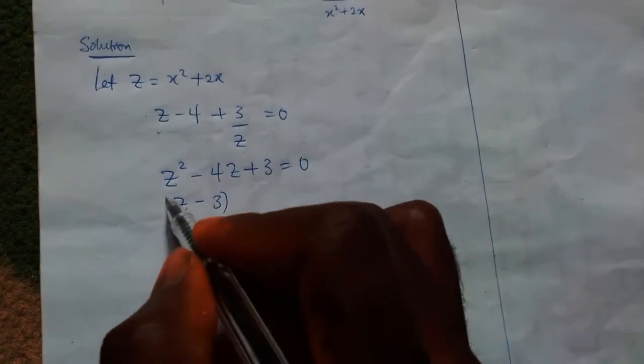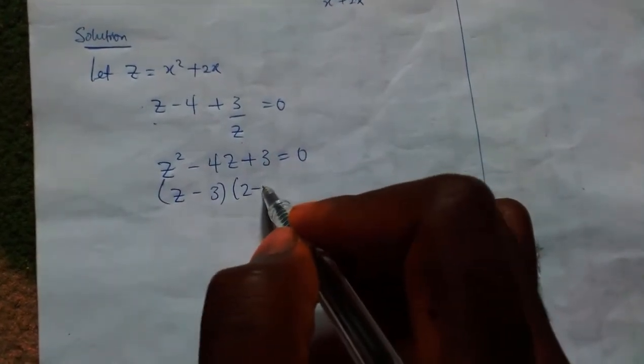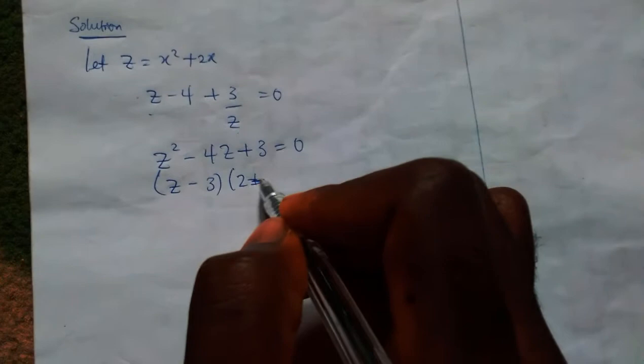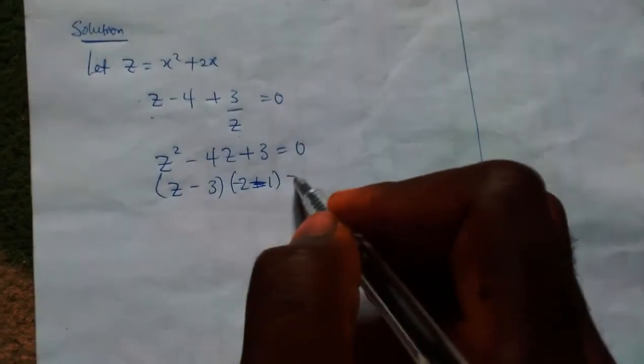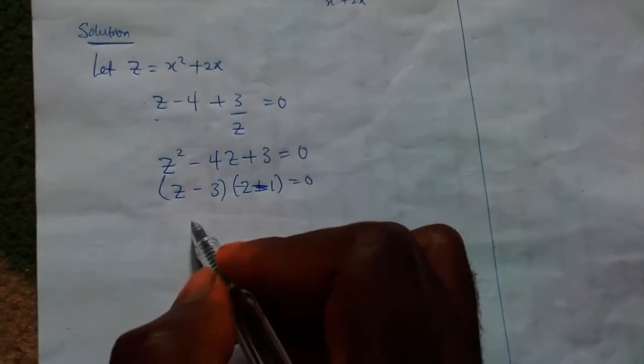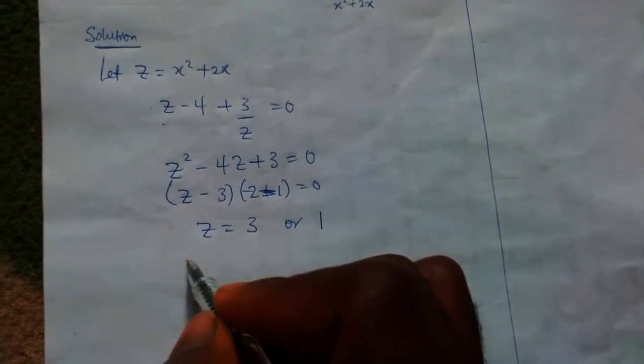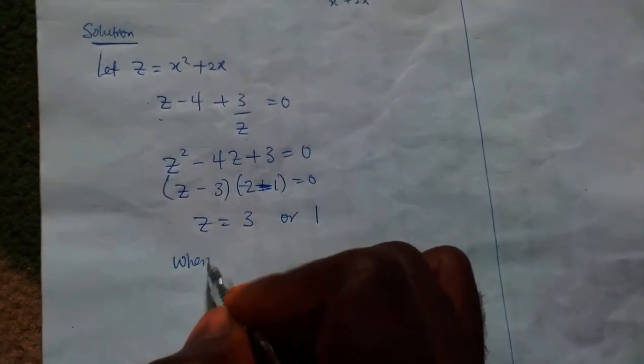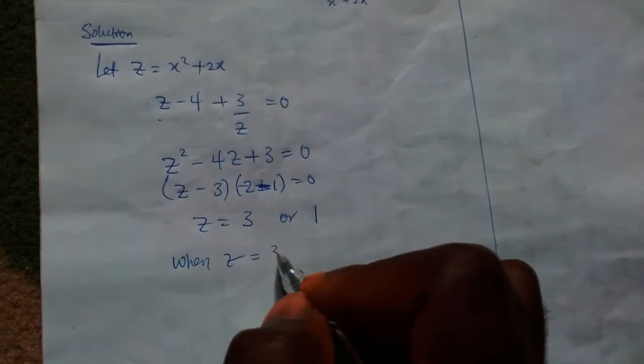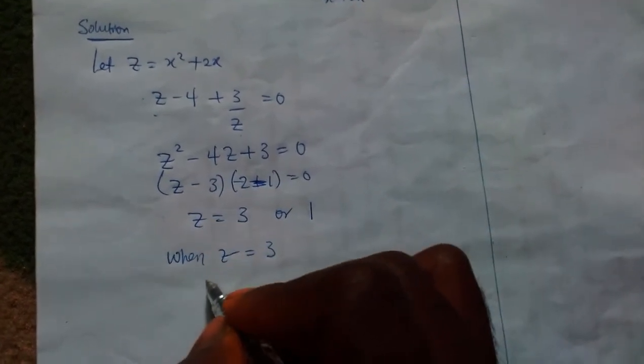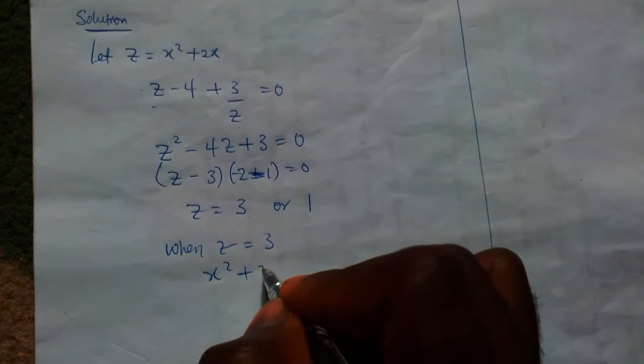From there, my z becomes 3 or 1. When z equals 3, we have x squared plus 2x equals 3, and from there we have x squared plus 2x minus 3 equals zero.